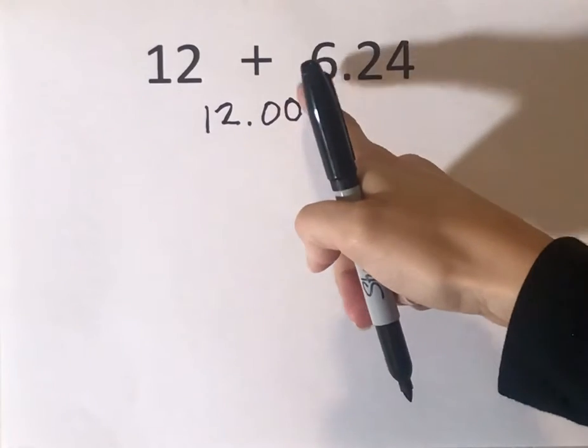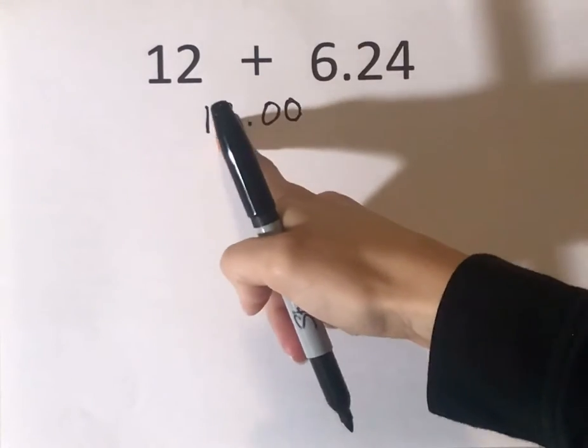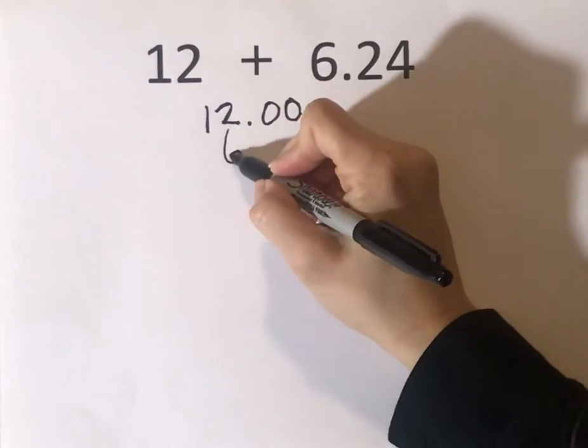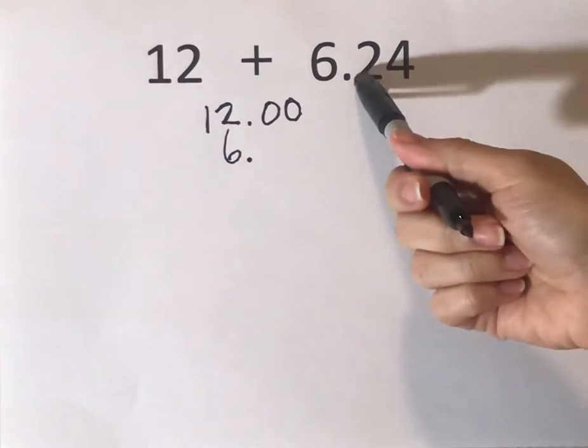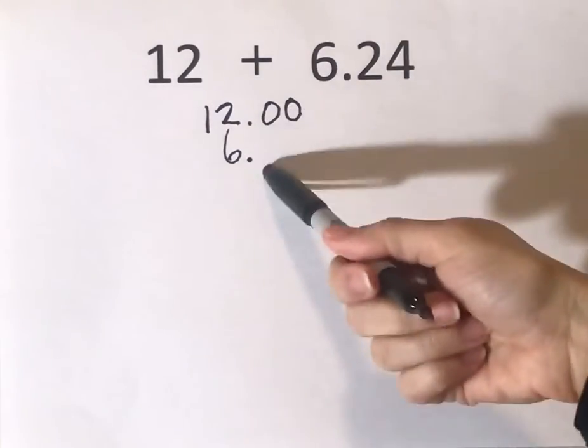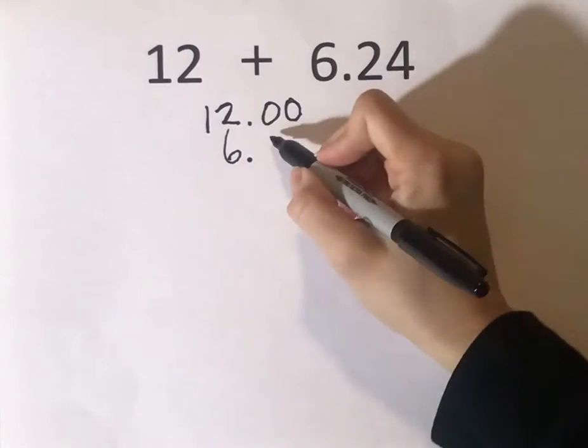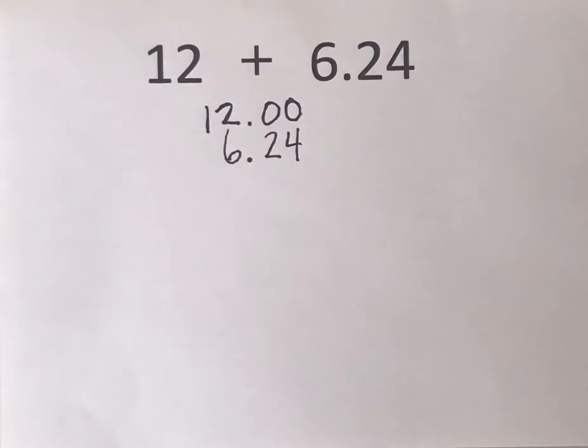And we're going to add to that $6.24. If you think about the six, the six is in the ones place. So I need to make sure that the six lines up with that two because that two is also in the ones place. I'm going to put the six here and then add in my decimal. And then I also need to put the 24 cents under this section here because the two is in the tenths place, that's here, and that's the hundredths. So that's the problem we want to do.